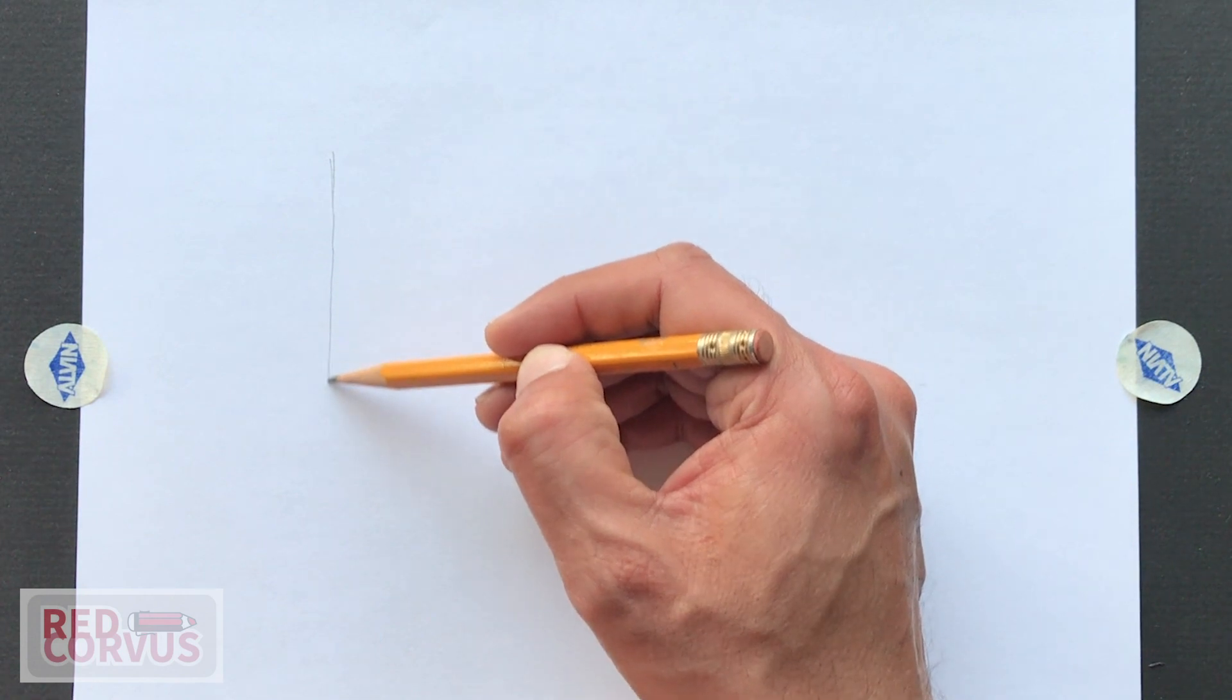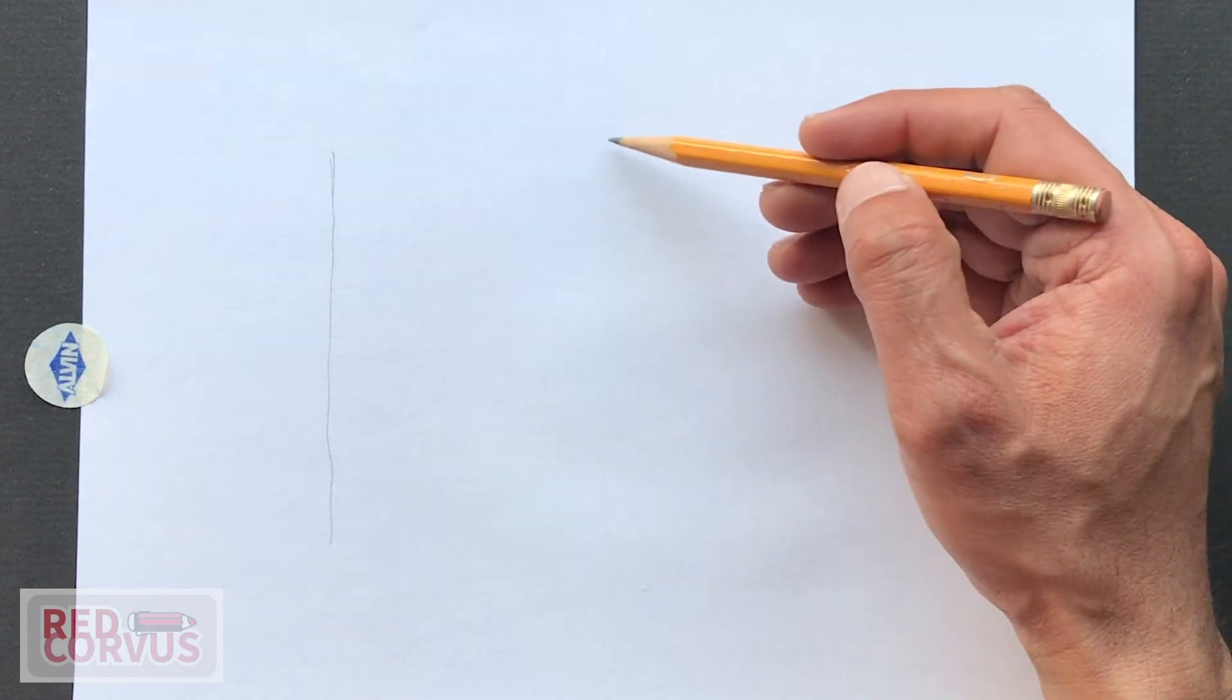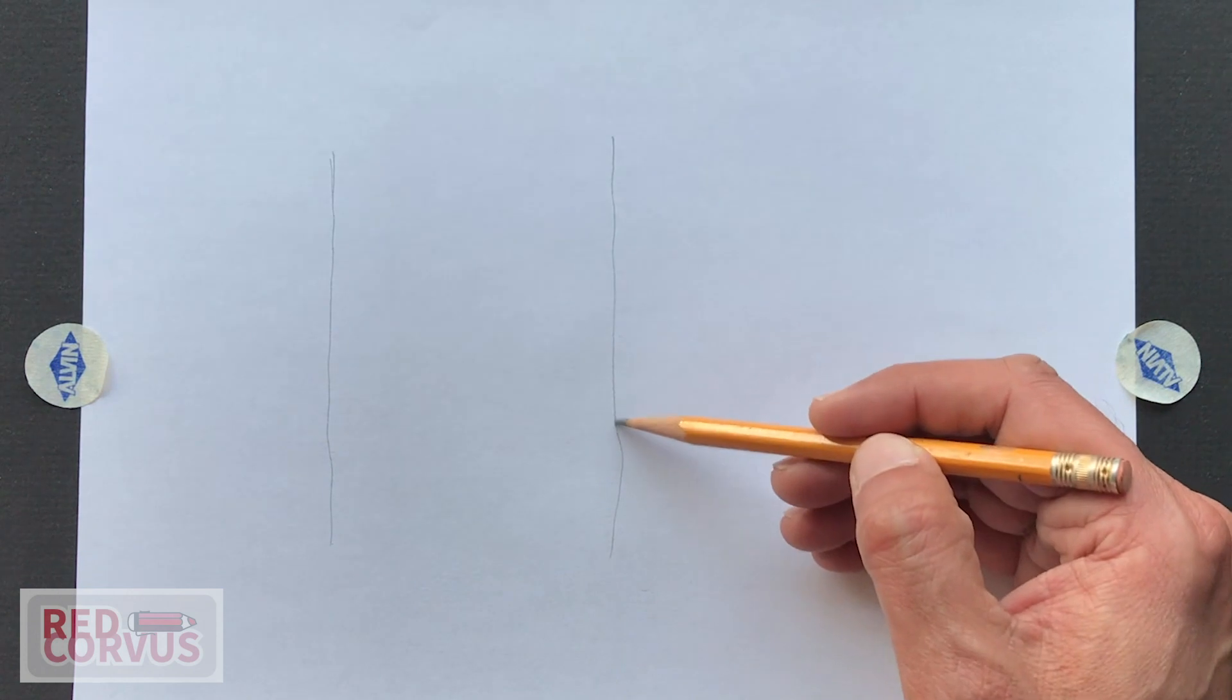We're going to start with drawing three lines. And this is a center line for each ice cream.